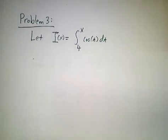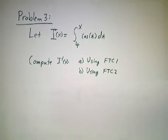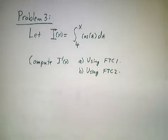In our third example, let's look at the integral of cos(s) ds from 4 to x, and I want to compute the derivative of that integral two ways. I want to compute it once using the first fundamental theorem, and then I want to compute it again using the second fundamental theorem. The idea is, let's see why these two things are the same.